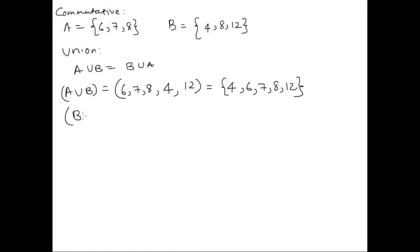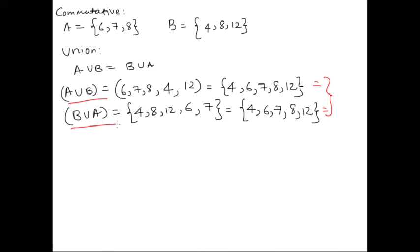Now let's do the same for B union A and see what we get. Write down all the elements of B first, that's 4, 8, 12, and then list out the elements of A without repeating anything. That's 6, 7, and 8 is common so we leave that. Let's arrange this in ascending order. So that's 4, 6, 7, 8, and 12. As we can see, these two here are the same, right? So this proves that A union B is always equal to B union A.